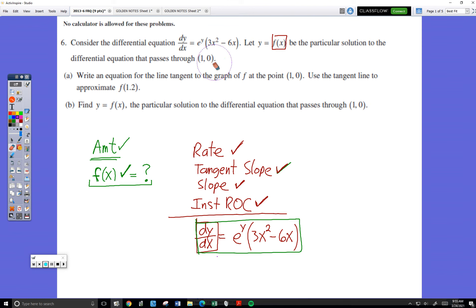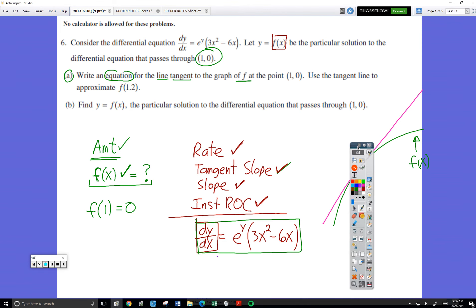That's what you have when the problem begins. You also know this. You know that for this formula f, when the x-coordinate has a value of 1, the y-coordinate will have a value of 0. Part A says, write an equation for the line tangent to f.